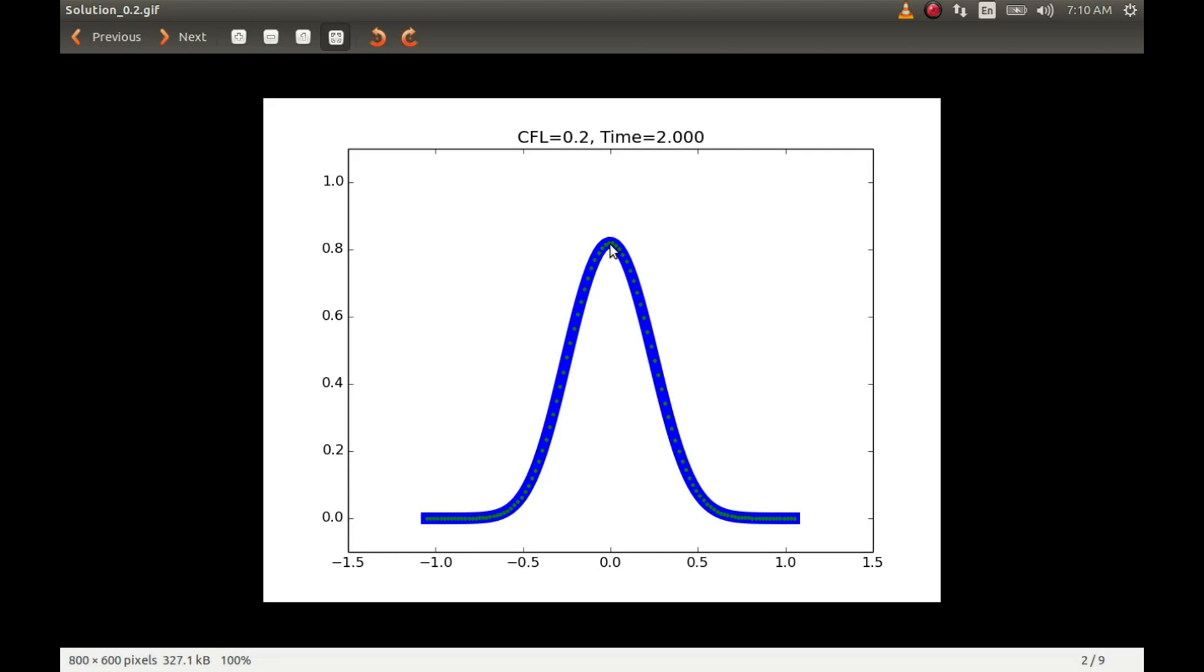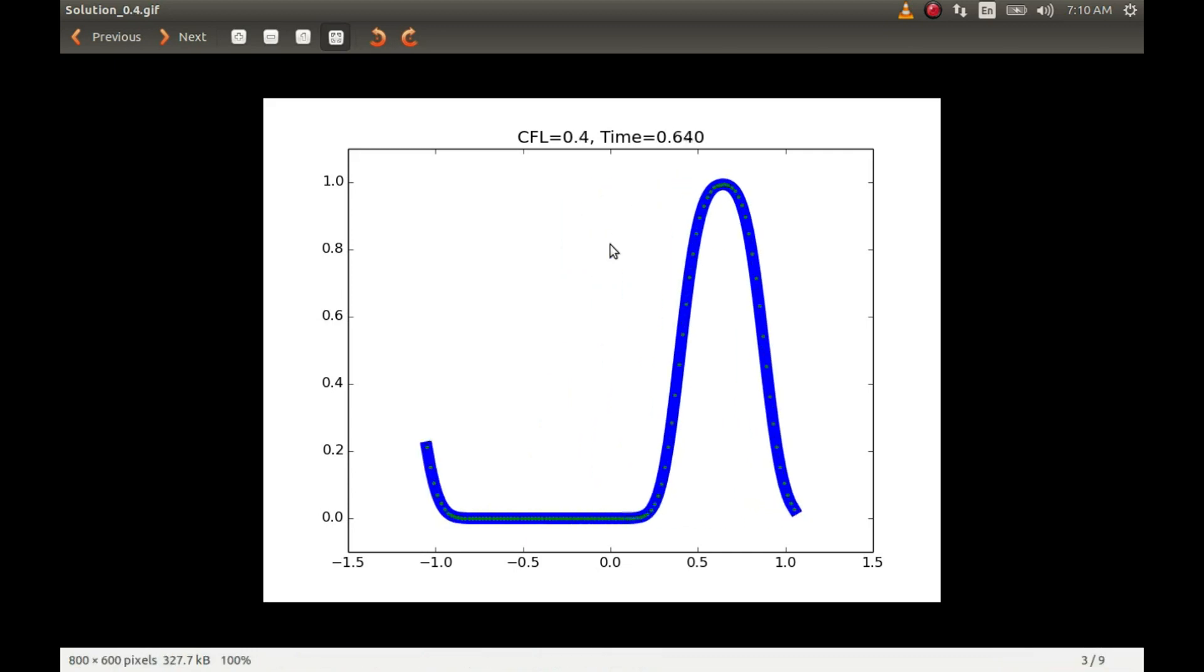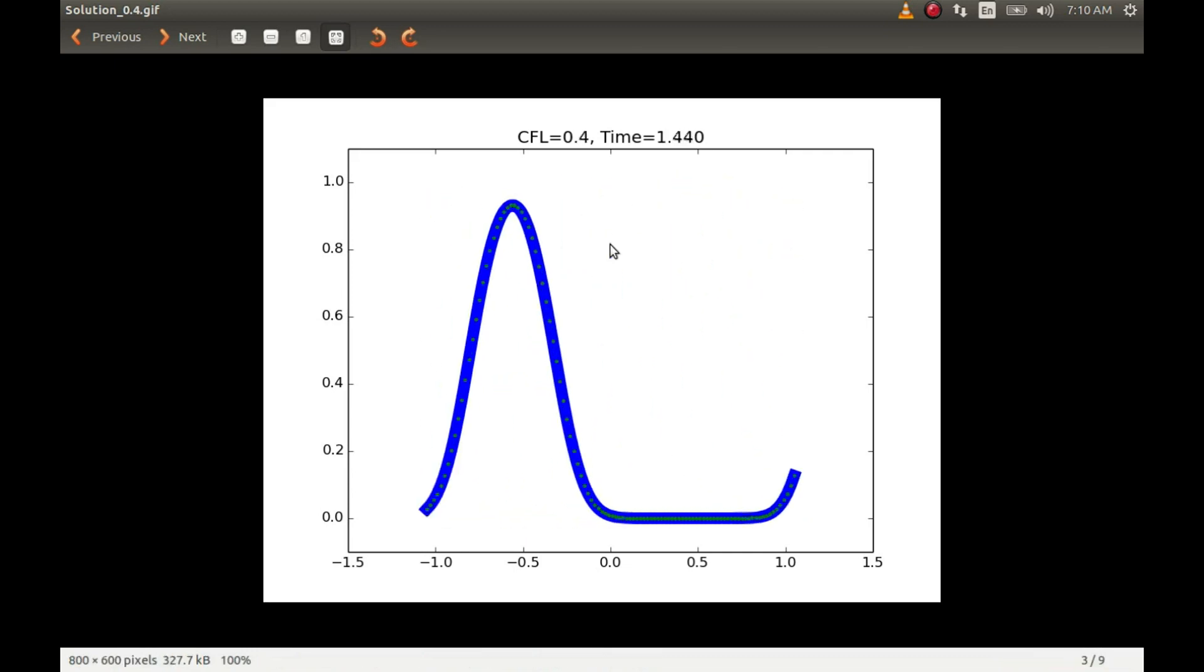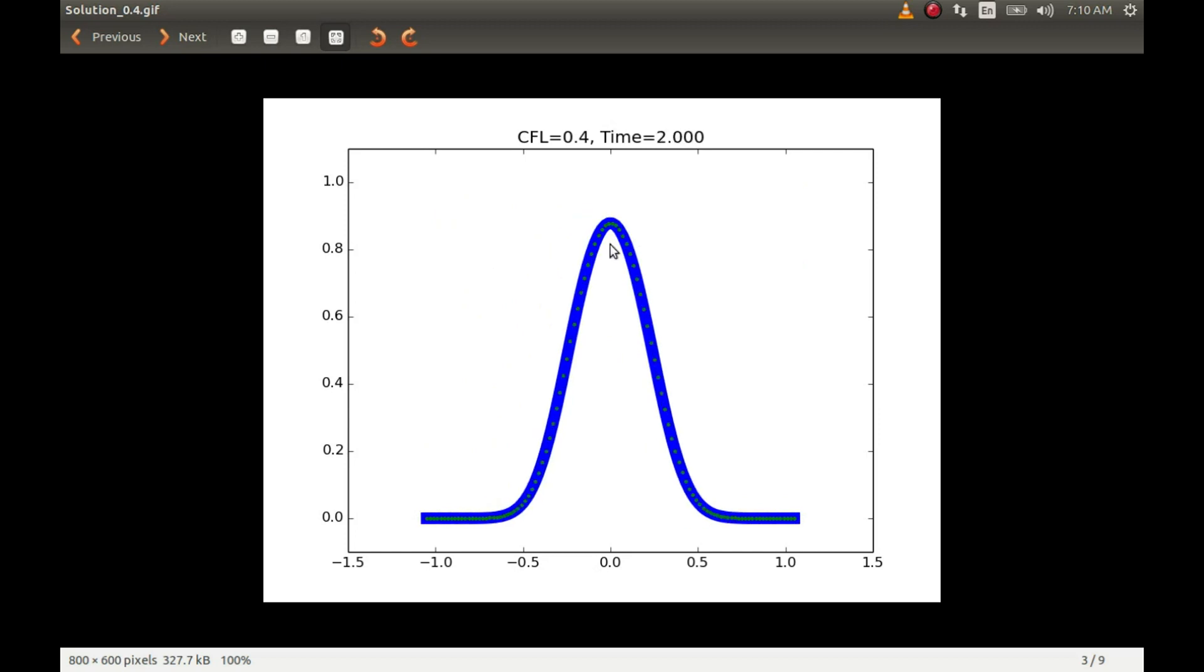So if we see that, now if we increase the CFL number to say 0.4, then we will see that the diffusion is not as much as it was for 0.2. If you see that it was here earlier, now it has gone above to a slightly less diffused state, but still you can see that there is a lot of diffusion taking place everywhere and also it has come down from 1 to something around 0.9.